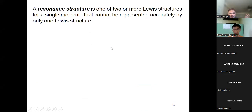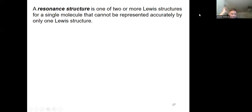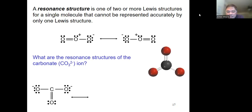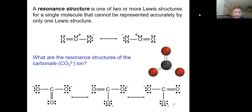Whenever we have two or more Lewis structures for a single molecule that cannot be accurately represented by only one Lewis structure, we have resonance. For example, ozone (O₃) is also a resonance structure, as is carbonate (CO₃²⁻) that we already discussed.